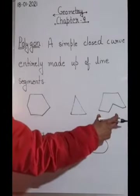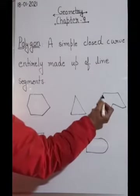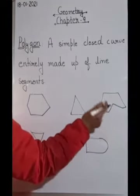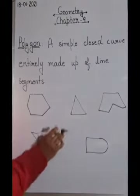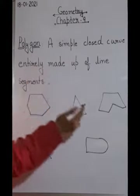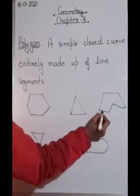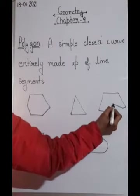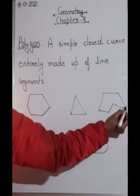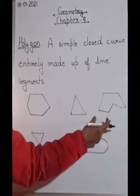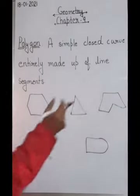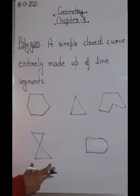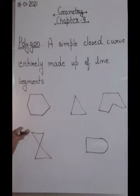Now look at this next figure. You can see it is a closed figure as it has the same starting and ending point, and second, it is entirely made up of line segments - these all are line segments. So this is also a polygon.